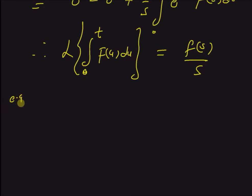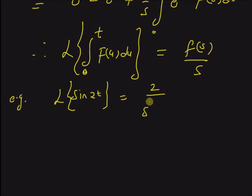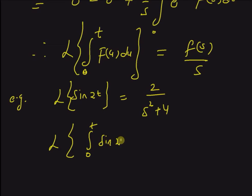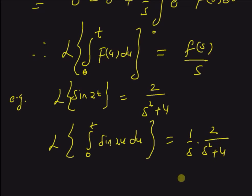Now let us look at an example using this property. The Laplace transform of sine 2t is given by 2 over s squared plus 4. Using the integral property, the Laplace transform of integral 0 to t of sine 2u du equals 1 over s times 2 over s squared plus 4, which equals 2 over s times s squared plus 4.